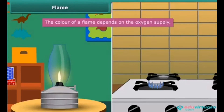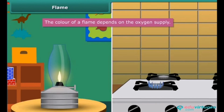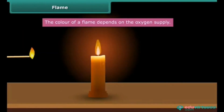When we look at a flame of a kerosene lamp, it is yellow in color, but the flame of a kitchen stove is blue. The color of a flame depends on the oxygen supply — if the oxygen supply is less, the flame appears yellow due to incomplete combustion of fuel; if it is more, the flame appears blue due to complete combustion. When we burn a candle with a matchstick, the heat of the matchstick melts and vaporizes wax, which rises through the wick and forms the flame.